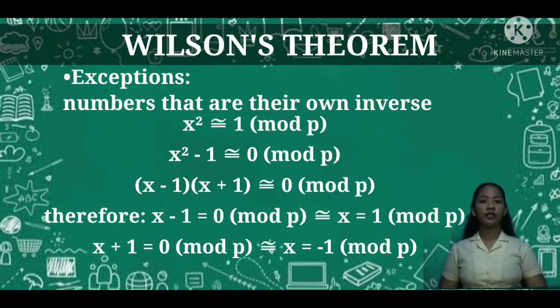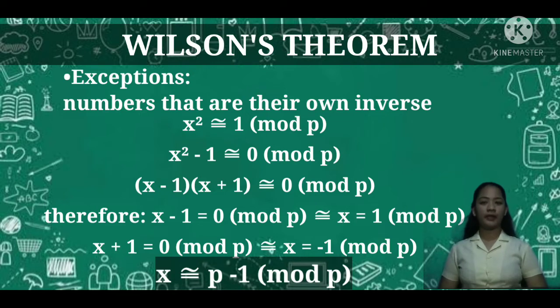Or we can write it alternatively as x ≅ p - 1 (mod p). So 1 and p - 1 are their own inverses.